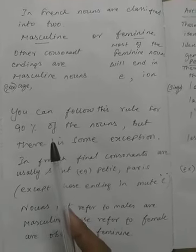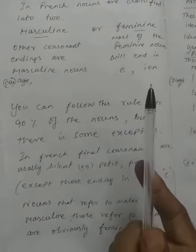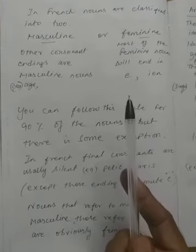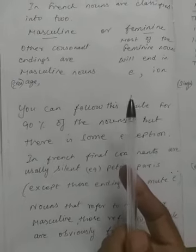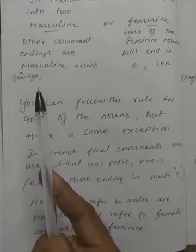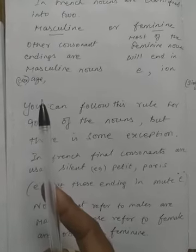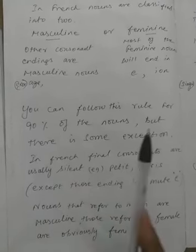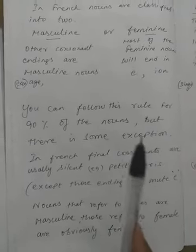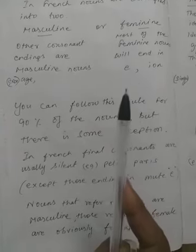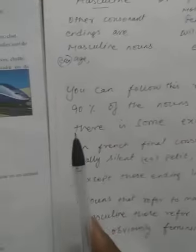To summarize the method: for feminine nouns, the ending will be -e, -i, or -on. Use this to identify and differentiate 90% of nouns. There are a few exceptions with -age and similar endings that must be memorized. With this method, you can identify the type of most nouns; the remaining exceptions you learn separately.